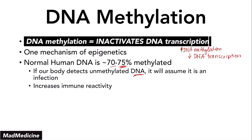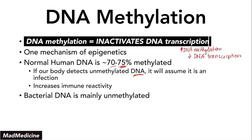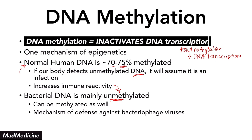So that's why DNA methylation is important for cancer prevention. The second reason is that bacterial DNA is mainly unmethylated. That means that when you have bacterial infections, our body is able to recognize it as unmethylated because our own normal human DNA is majority methylated, and that allows an additional immune response. This is also one defense mechanism present against bacteriophage viruses, which want to go into bacteria and replicate there.